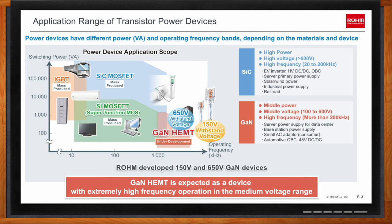Finally on the graph, at the lower right, are the GaN devices. These support medium power levels similar to silicon MOSFETs, but at much higher switching frequencies that reach into the megahertz range. The higher switching frequencies provide opportunities to reduce the size of power solutions and increase power density, making them ideal for power supplies in data centers, servers, telecom base stations, and even EVs.